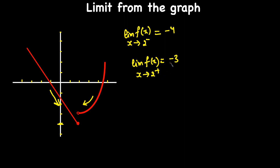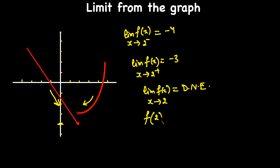Since the limit from the left is not equal to the limit from the right, the limit of f of x as x approaches 2 does not exist. But you can find the value of the function at that point — at x=2, the solid dot (closed circle) gives f(2) = negative 4.